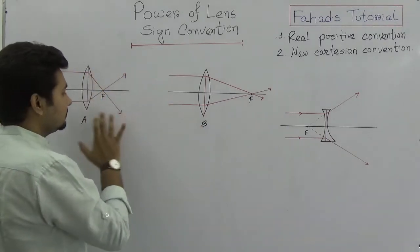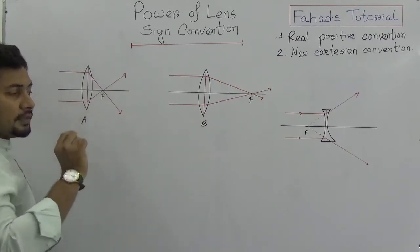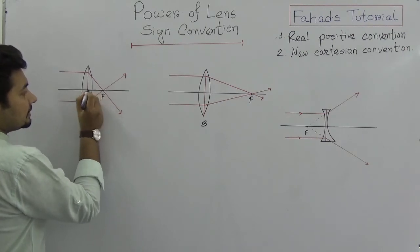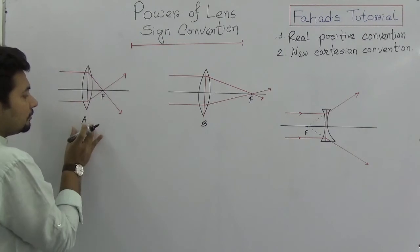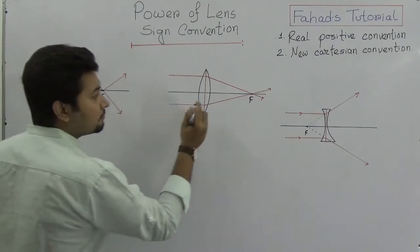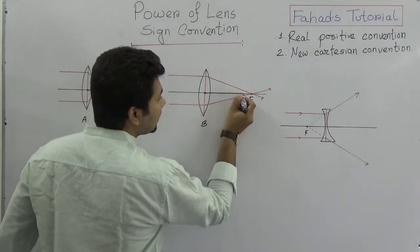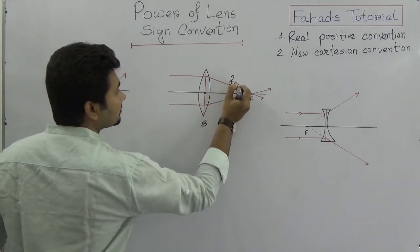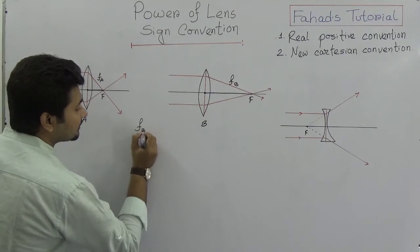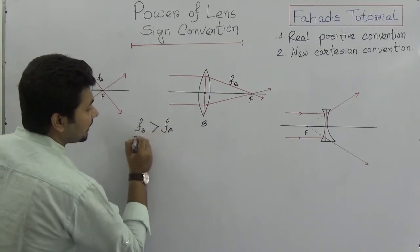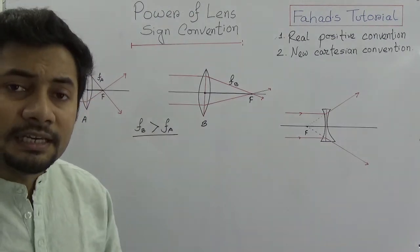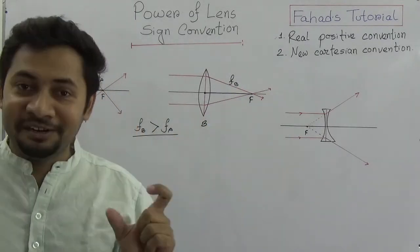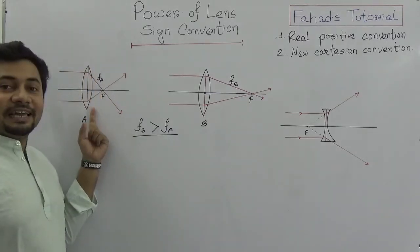From the optical center, the distance to the principal focus is the focal length. Looking at the focal length of lens A and lens B, we can see that the focal length of B is greater than the focal length of A. That means the focal distance is greater in lens B, and that is why the power of lens B is comparatively less than lens A.